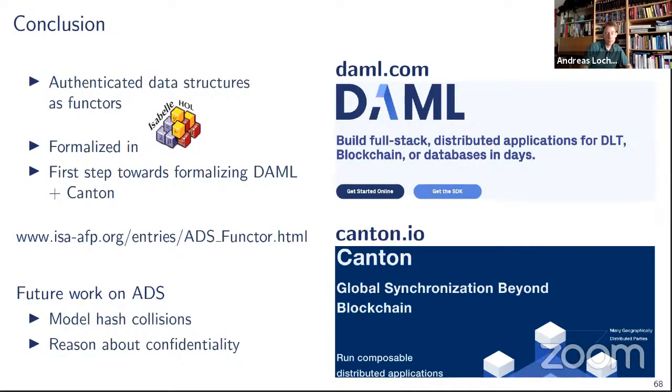In terms of future work, so we'd like to get rid of the assumption that there are no hash collisions and rather make them explicit in the theorems. We have a few ideas around that, but it's unclear how much more complicated the proofs will get. And the current modeling is also not really suitable to reason about confidentiality. So it's fine to reason about authenticity of the data. And this is what mostly the inclusion proofs are about. So for proving integrity for the protocol, this will be enough. If we want to talk about privacy and confidentiality, we will need to extend the formalization. Thank you. Any questions?